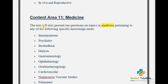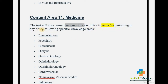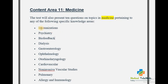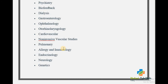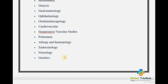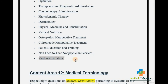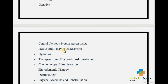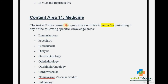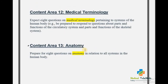Content Area 11 is Medicine. You can expect 10 questions on topics in medicine pertaining to the following areas: immunization codes, psychiatric codes, biofeedback, dialysis, gastroenterology, ophthalmology, otorhinolaryngology, cardiovascular, non-invasive vascular studies, pulmonary, allergy and immunology, endocrine, neurology, genetics, moderate sedation, medical nutrition, dermatology, hydration and infusion codes, injection codes, and chemotherapy codes.